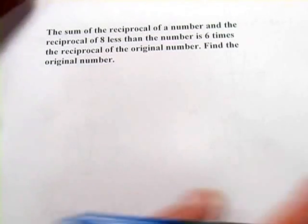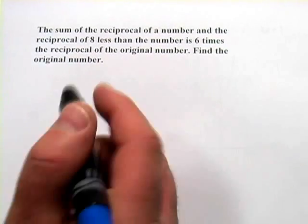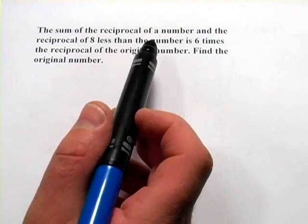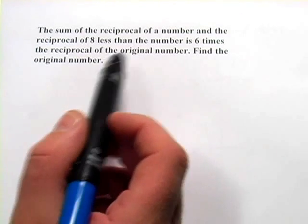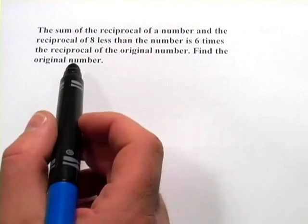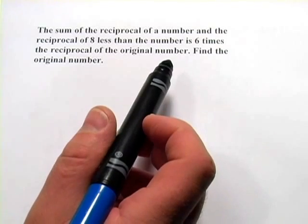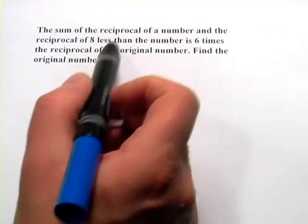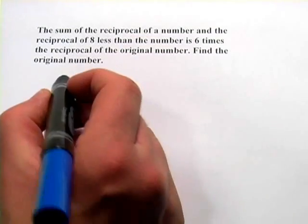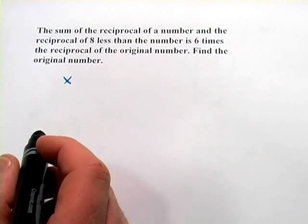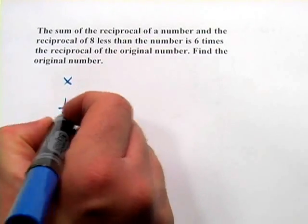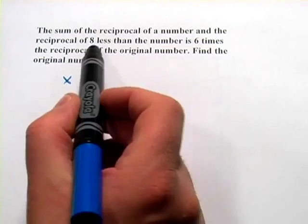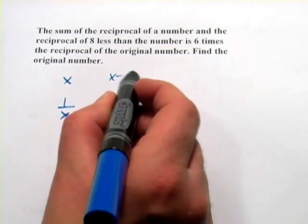This one is a number problem. It says the sum of the reciprocal of a number and the reciprocal of 8 less than the number is 6 times the reciprocal of the original number, and find that number. This sounds complicated, but let's take it a step at a time. Let's call the original number x. The reciprocal of that number is 1 over x, and 8 less than the number is just x minus 8.